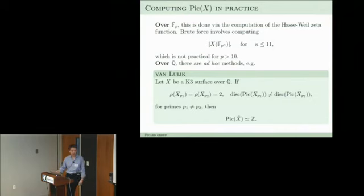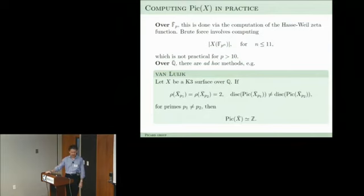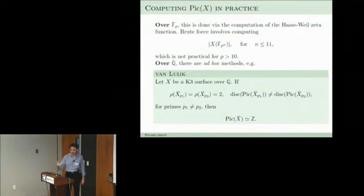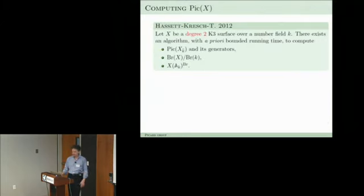That's okay if you're interested in K3s over F2 or F3, but not otherwise. Over a number field there is an ad hoc method: if you can compute the Picard ranks over the algebraic closure of Fp for two different primes and know something about those lattices — noting that over the algebraic closure of Fp the rank is always even — then if you happen to get rank 2 at two different primes and those lattices don't match, you can conclude that the geometric Picard rank over Q-bar is 1. This method was implemented and produced the first examples of K3 surfaces over Q with geometric Picard rank one.